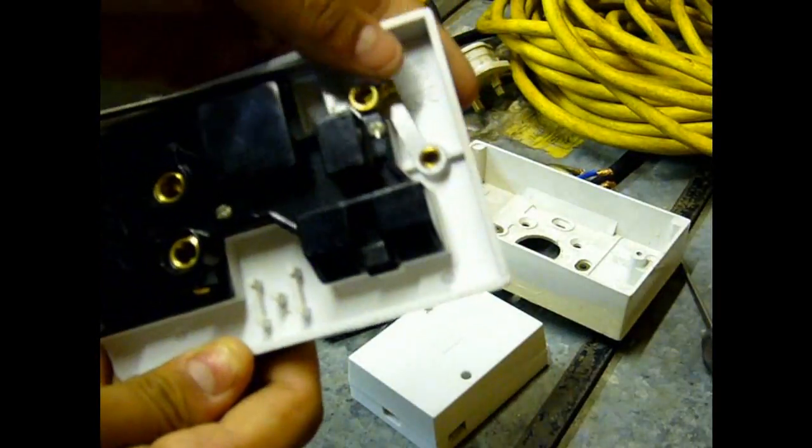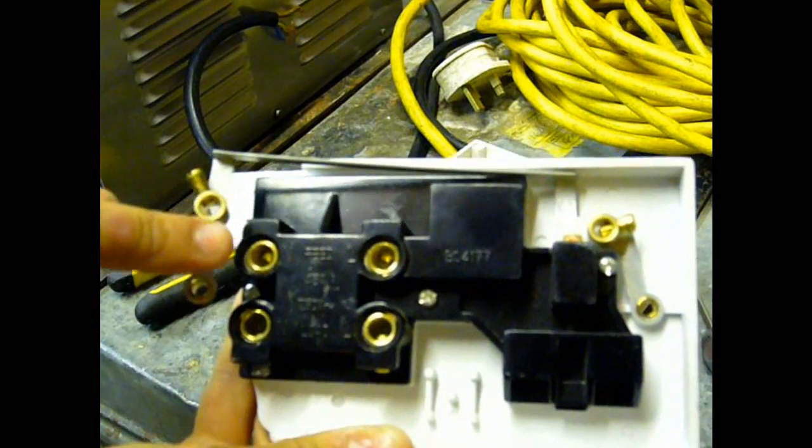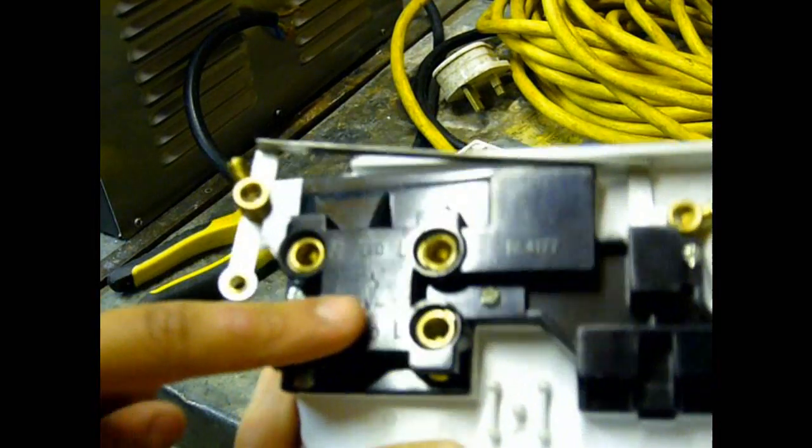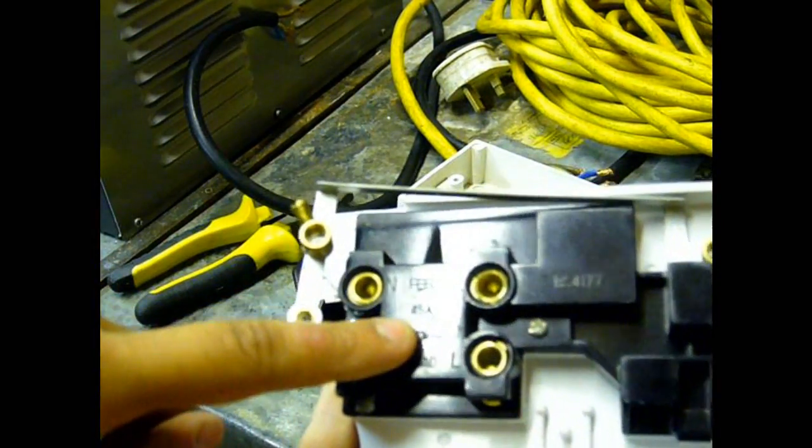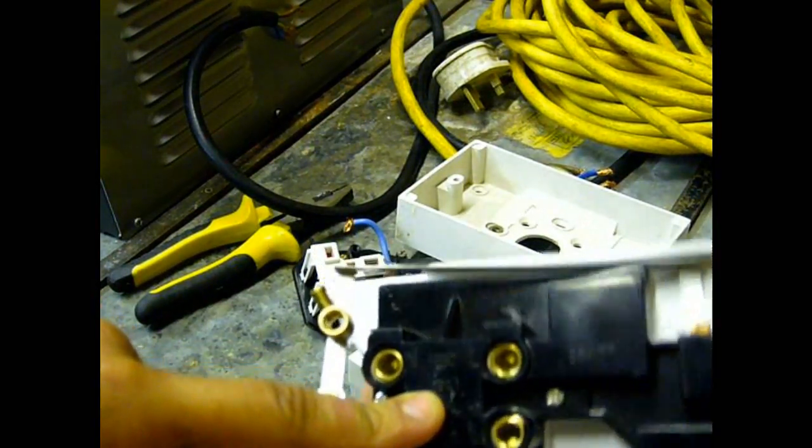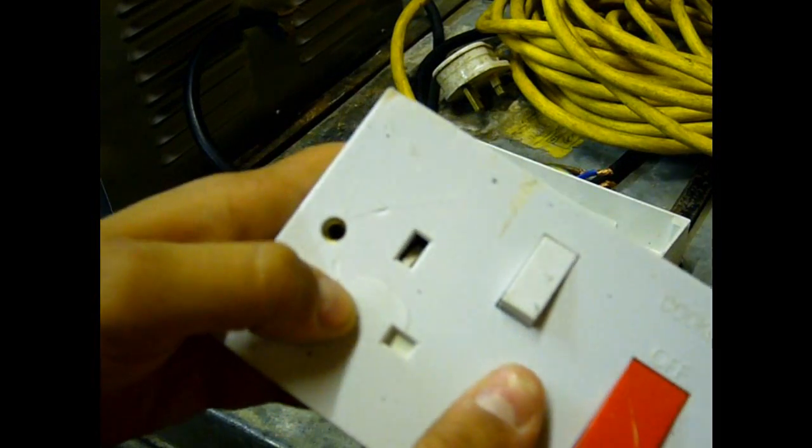This is basically what it should look like at the back: two earth terminals, one there, one there, your feed which is your power wire, and your load which is your welder or any other item. The reason I use this is it's a 45 amp switch. It can handle it and so can the socket.